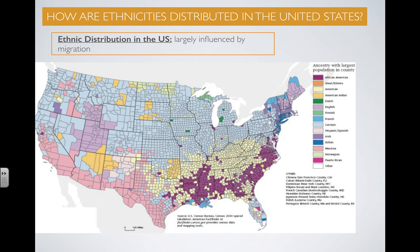If you look at the map of ethnic distribution in the United States, the key factor that explains this current distribution of ethnicity is migration.